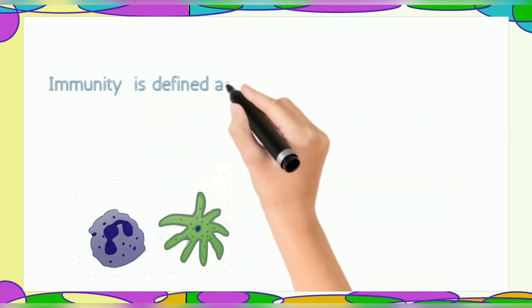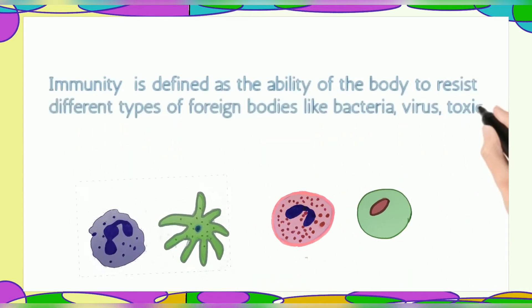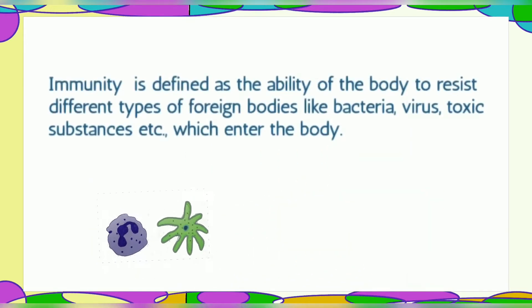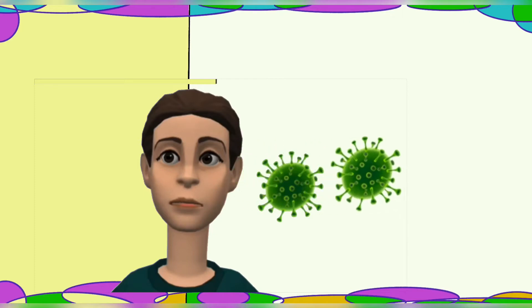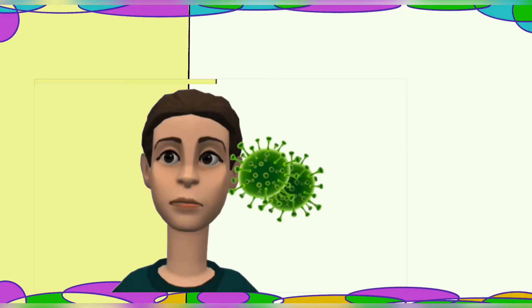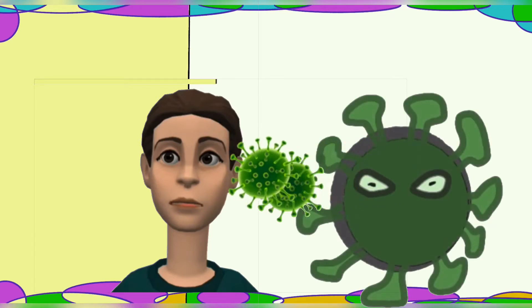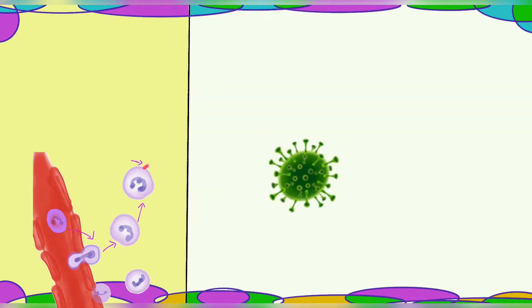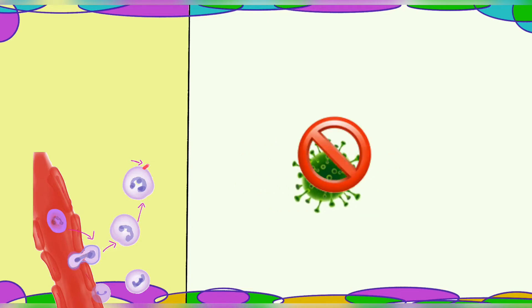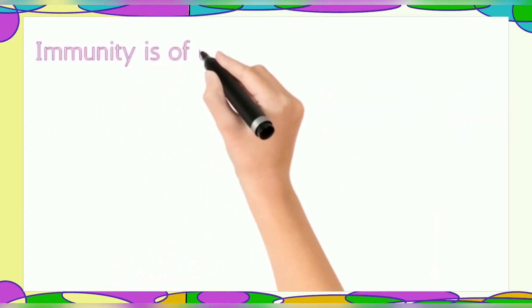Immunity is defined as the ability of the body to resist different types of foreign bodies like bacteria, virus, and toxic substances which enter the body. When foreign objects like bacteria, virus, or toxic substances enter the body, our immune system resists them — this resistance power is what we call immunity.